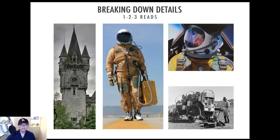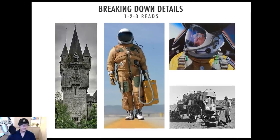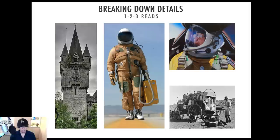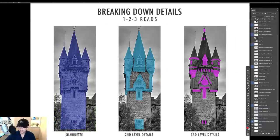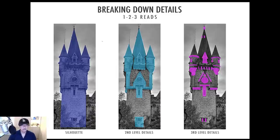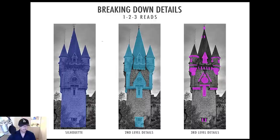I put a couple of images here of very standard designs we see in the industry: an environment, a costume or character, a detail of that costume, and a prop or vehicle. At first glance we understand what we're looking at. When we look at a design — in this case a castle tower — we actually see the silhouette first. That's how the human eye functions. We don't look at individual bricks or tiny details in the clock; we get an overall feel of the design.